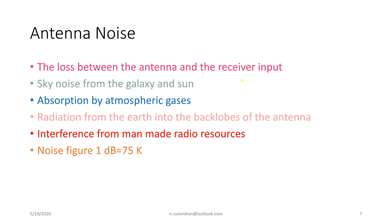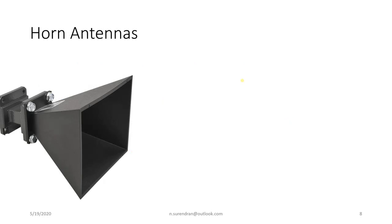Antenna noise: the factors that cause antenna noise are losses between the antenna and receiver input, sky noise from the galaxy and sun, atmospheric absorption by gases like O2 and hydroxyl ions which absorb electromagnetic waves, radiation from the earth into the back lobes of the antenna, and interference from man-made radio sources such as vehicle emissions. The relationship between noise figure and noise temperature is: 1 dB equals 75 K.